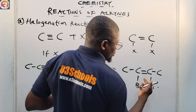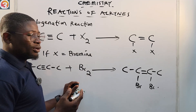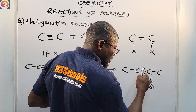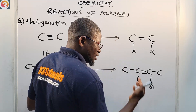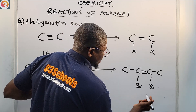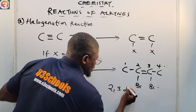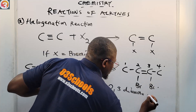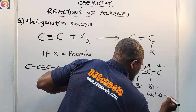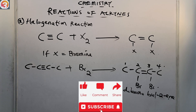The double bond position is very important for naming the product. Naming from left to right, the double bond is on carbon 2, and the bromines are on carbons 2 and 3, so the compound is named 2,3-dibromobutene — specifically but-2-ene, since this is an alkene, not an alkane.